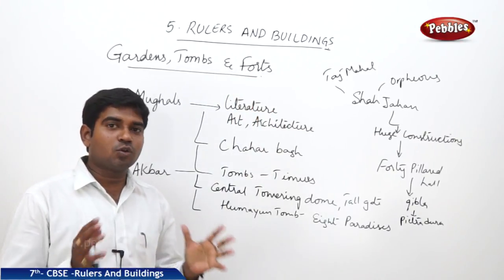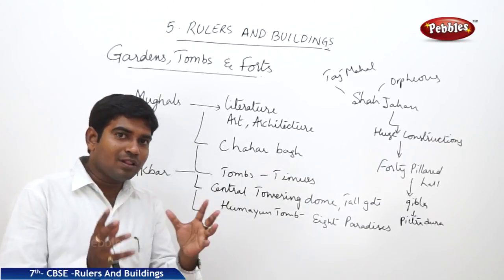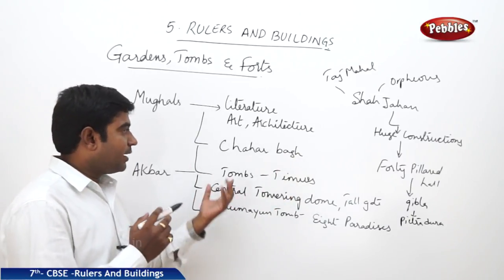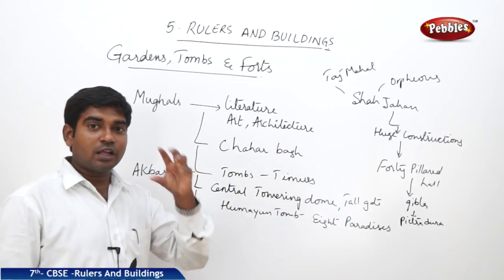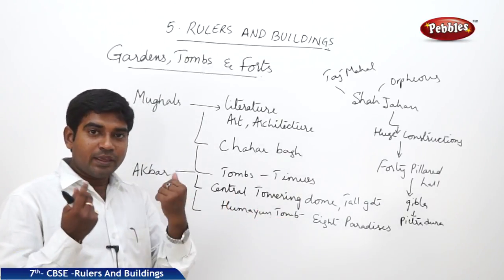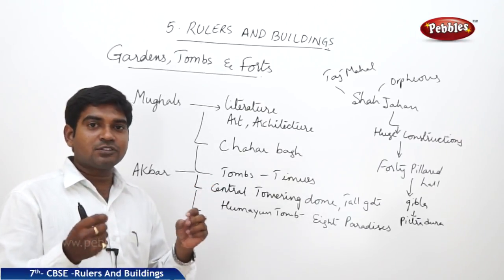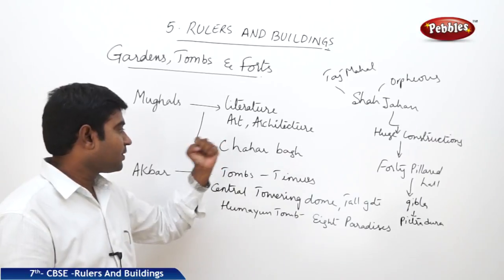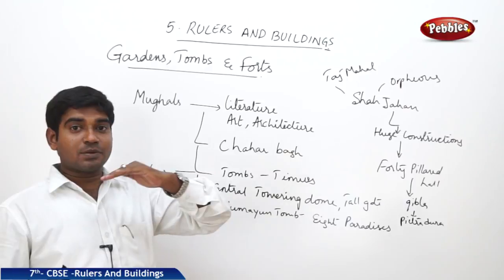Regarding gardens, tombs, and forts — almost all the Mughal rulers, including Humayun, Babur, Shah Jahan, Jahangir, and Akbar, were interested in literature, art, and architecture. They called the gardens 'Chahar Bagh.' Babur himself describes how he played in gardens during his early childhood and liked dividing gardens into symmetrical rectangles and four parts. It was during the time of Akbar that constructions transformed, especially with regards to tombs.